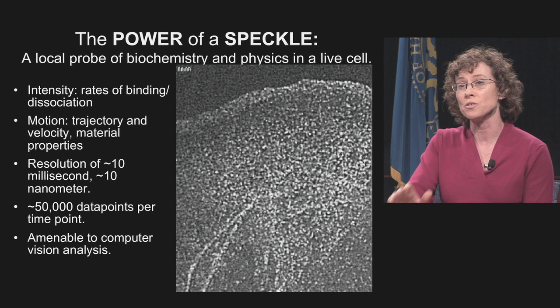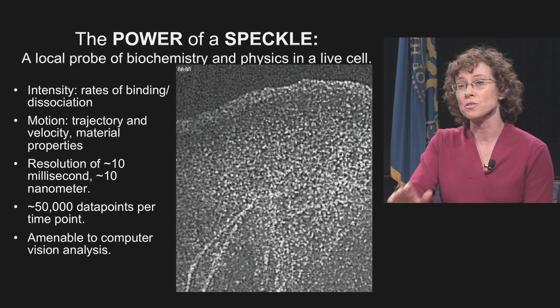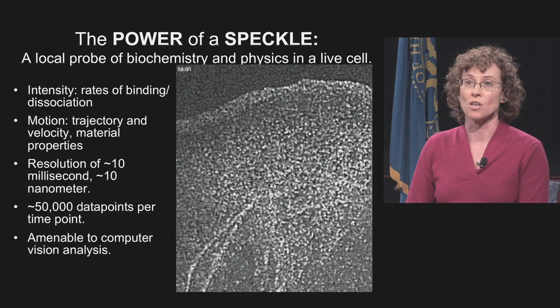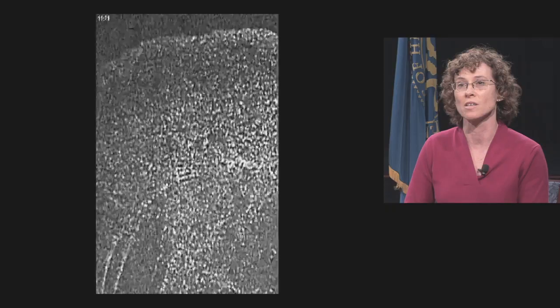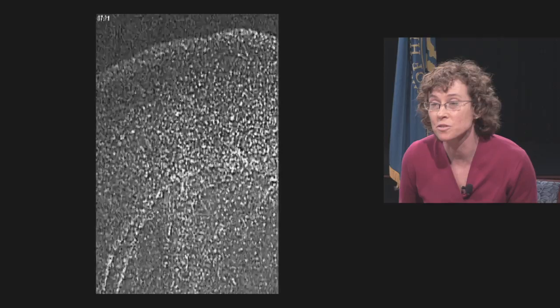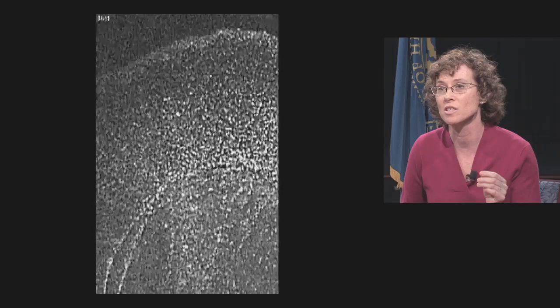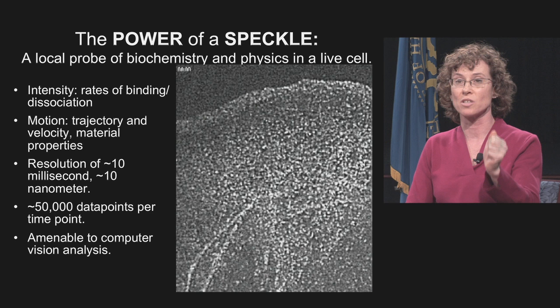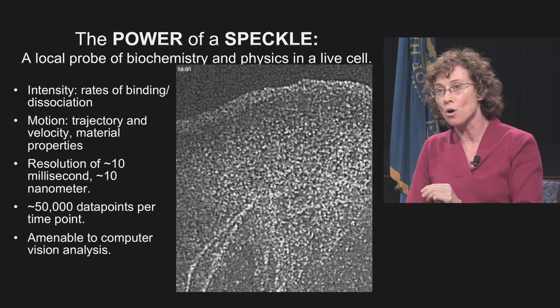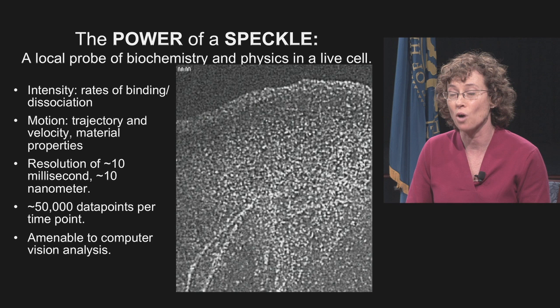What good do speckles do you? A speckle acts as a local probe of biochemistry and physics in a living cell. In a speckle microscopy movie of the actin cytoskeleton at the leading edge of a migrating cell, the change in intensity of each speckle represents the rate of assembly and disassembly of actin monomers into filaments within that tiny diffraction-limited region — that's biochemistry. The motion of those speckles encodes the trajectory, velocity, or material properties of the actin cytoskeleton — that's physics.